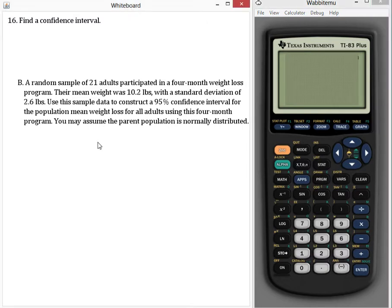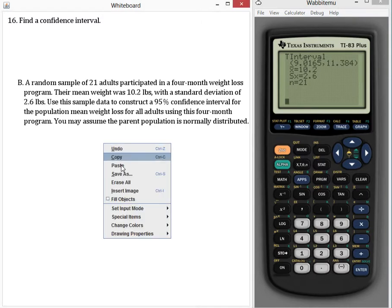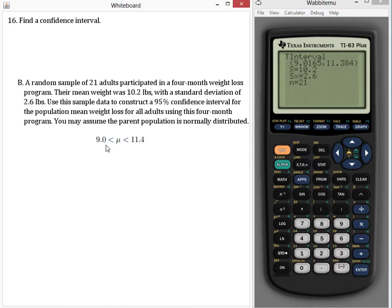And the result we get is this. So we're going to round to the first decimal because our mean and standard deviation are accurate to only the first decimal. So our final answer here is mu. We are 95% certain that our population mean is somewhere between 9.0 and 11.4. I'll just round it off to the first decimal.